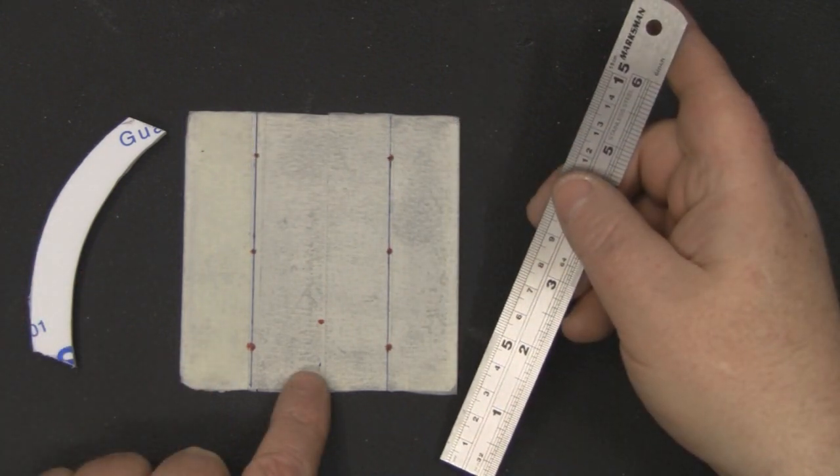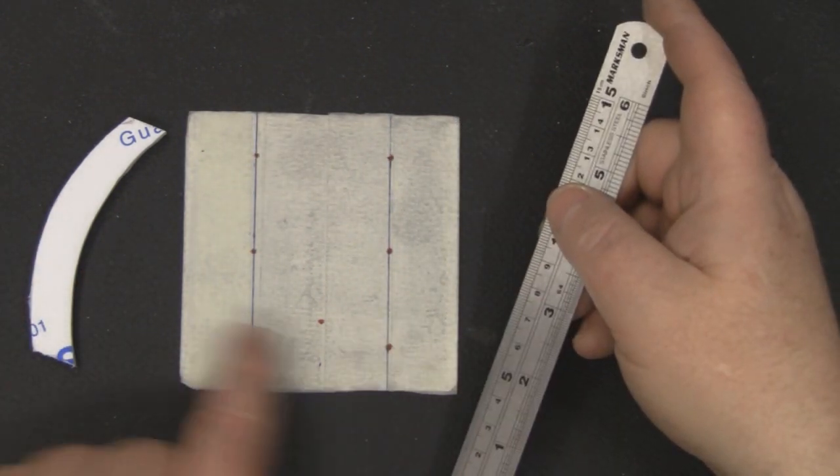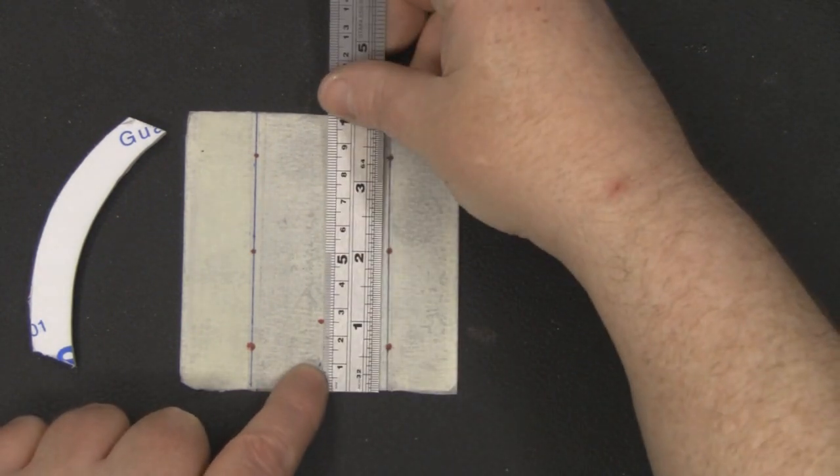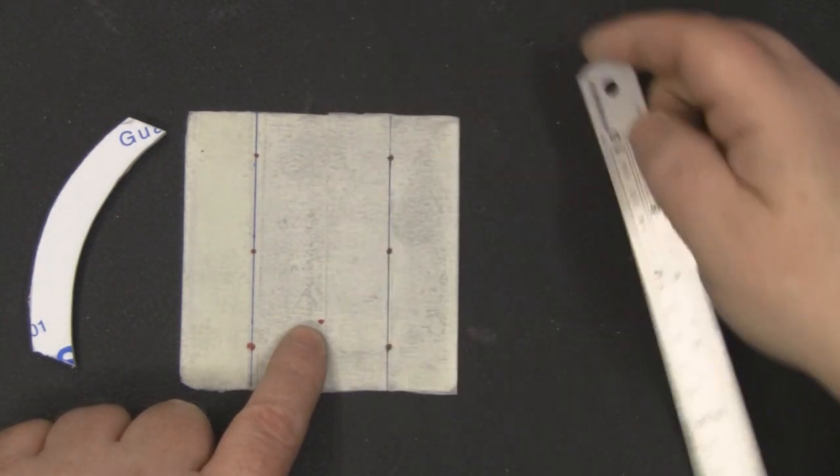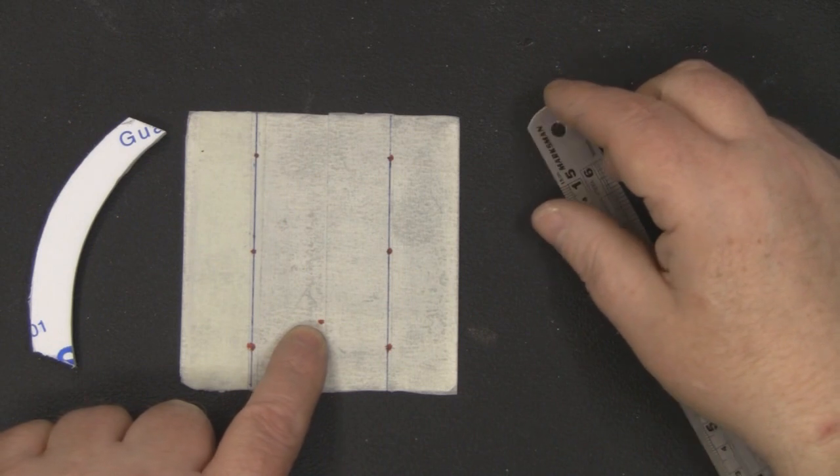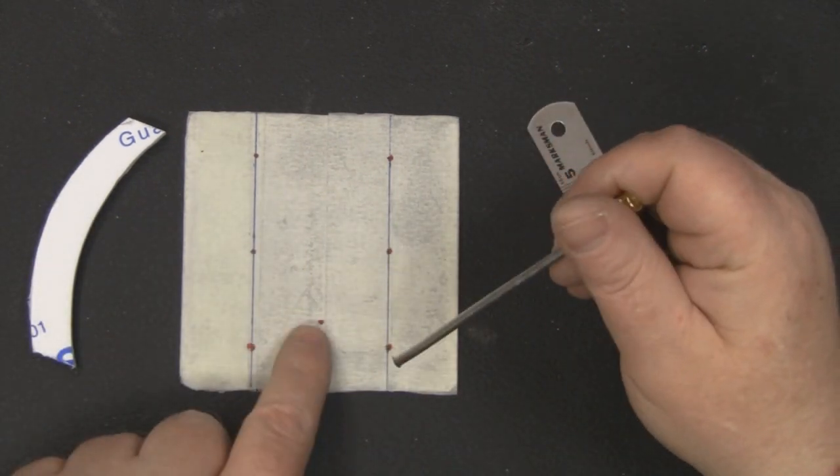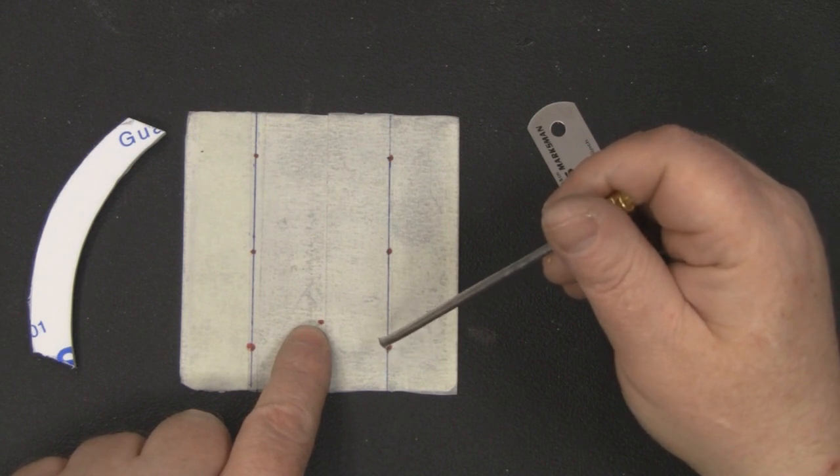For the hole for the semi-rigid coax, I've measured across here and found the middle. I've measured up from the edge here 25 millimeters and I shall drill a 5 millimeter hole in there so we can fit our semi-rigid coax through and also solder it onto the back of this as well.